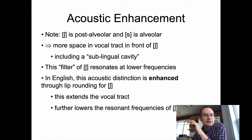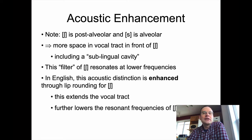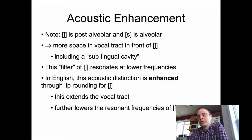In English, the acoustic distinction between S and Esch is also what they call enhanced through lip rounding for Esch. You can say S and Esch without rounding your lips for either one — s, sh — and you can hear the difference between them. But typically, when people say Esch or at least emphasize it in English, they'll round their lips to a certain extent and kind of protrude them as well.